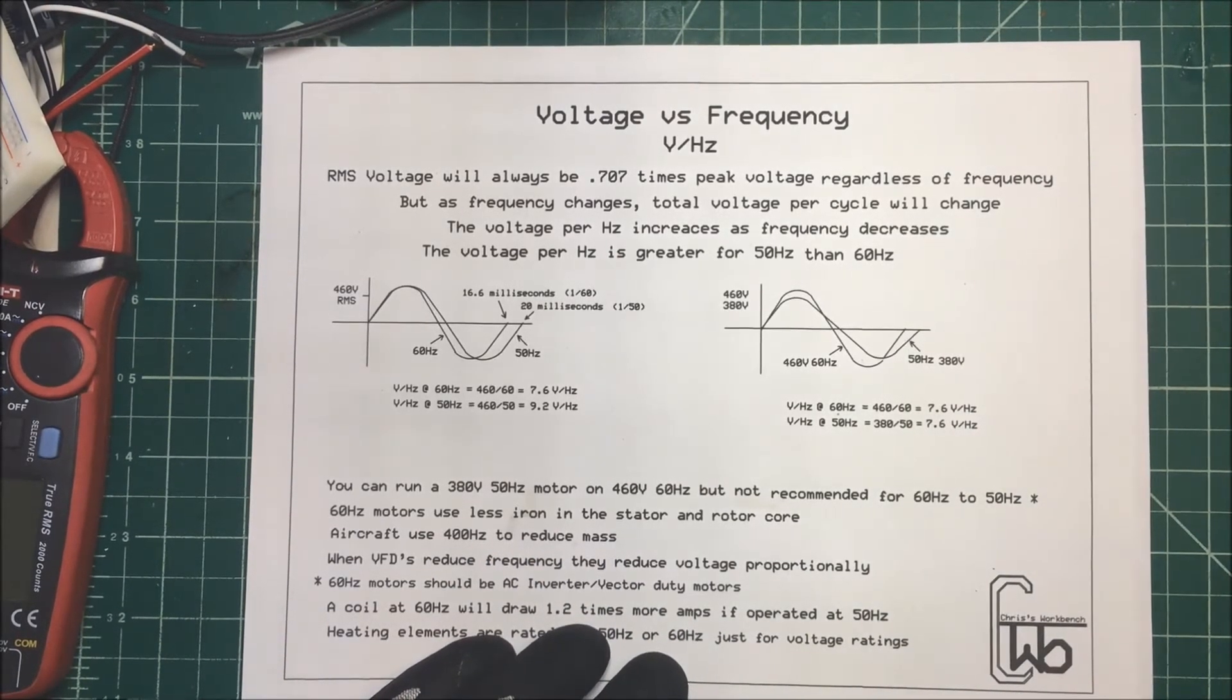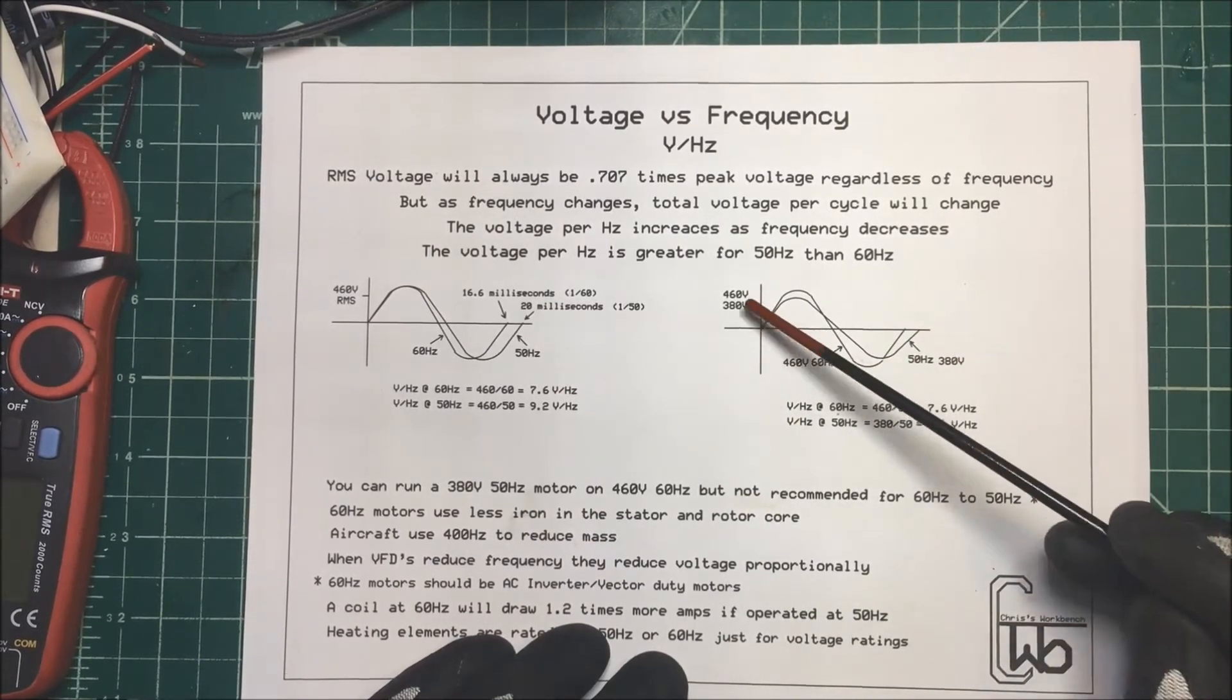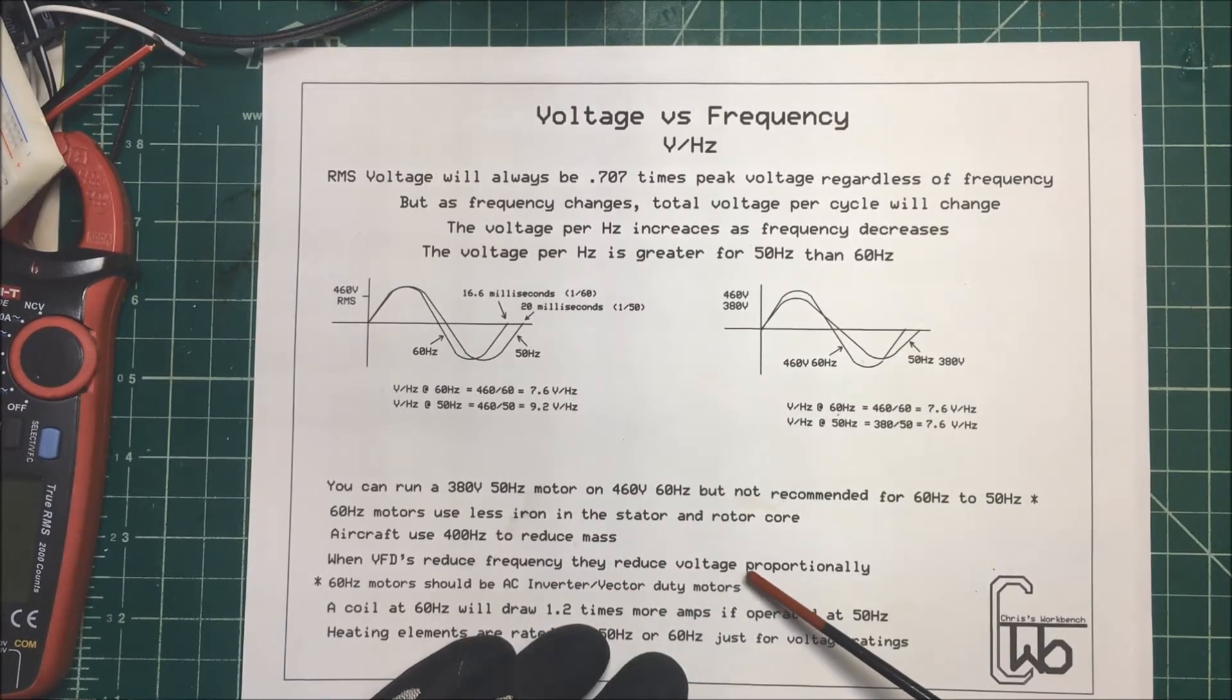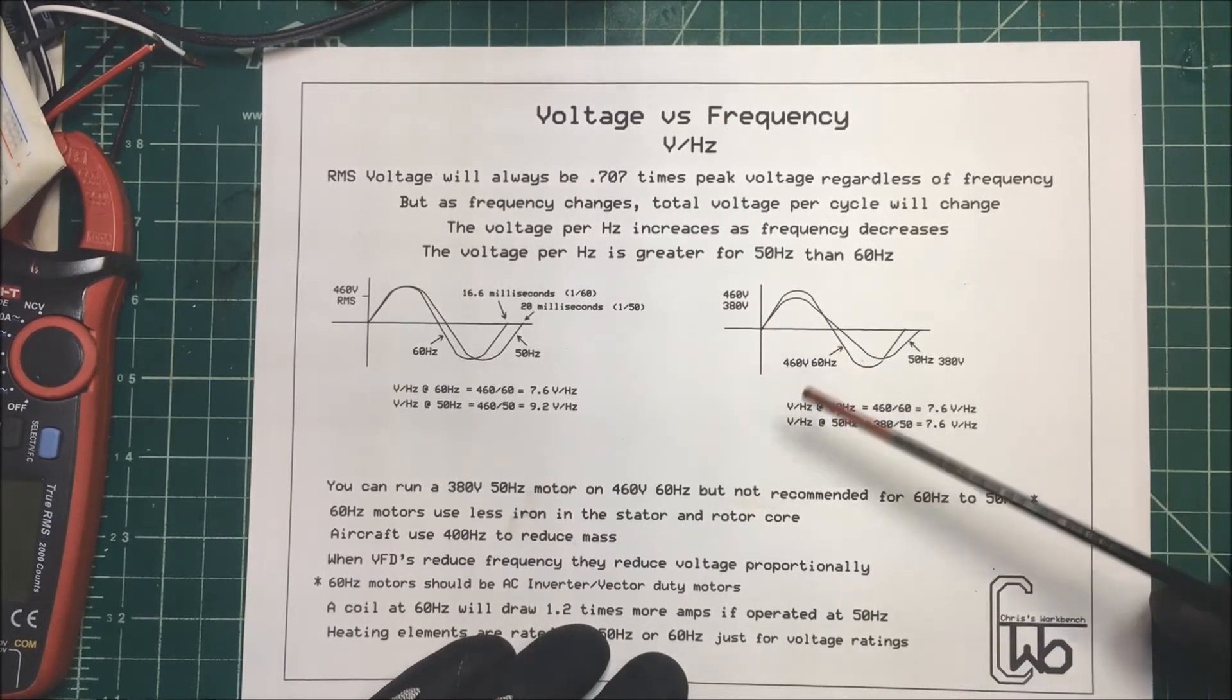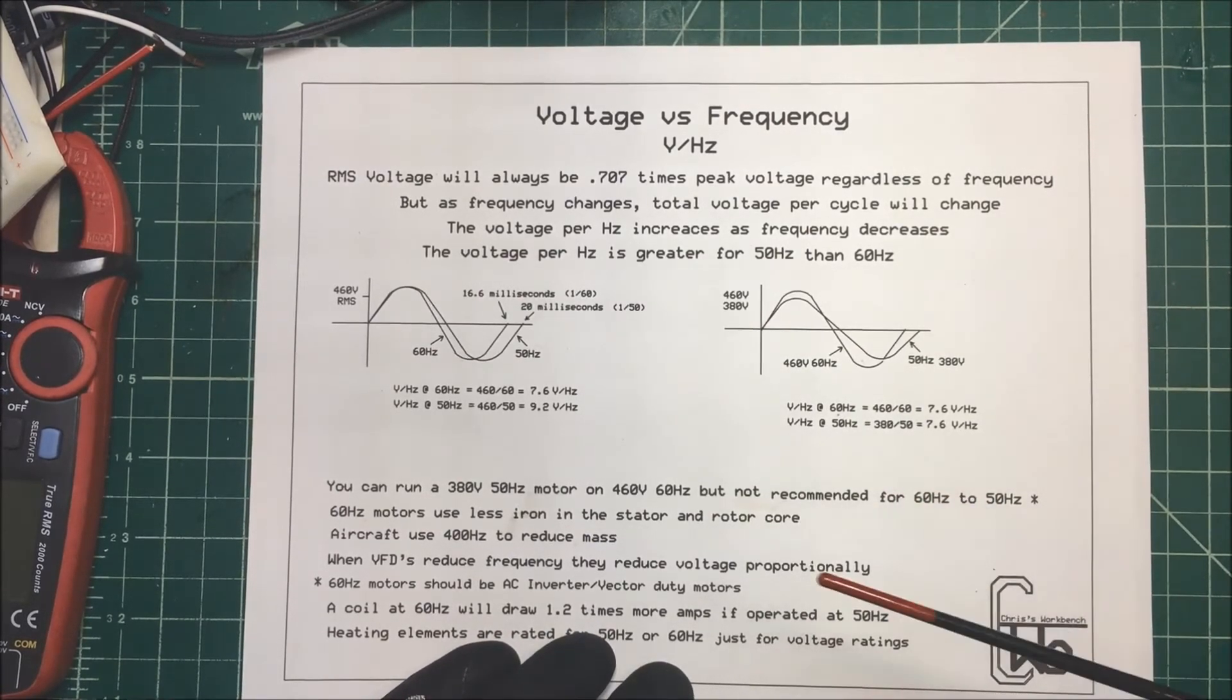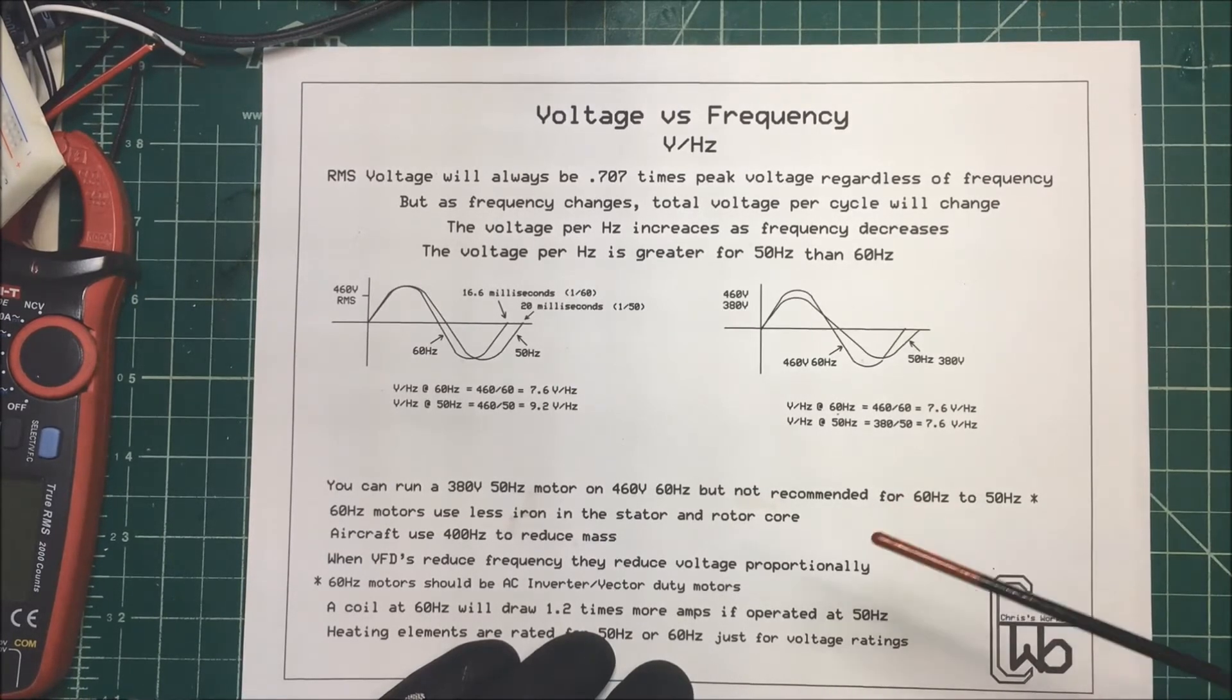But now we take and run a 460 volt motor at lower frequencies all the time. We use a VFD to reduce the frequency. And when we do that, it reduces the voltage proportionally. So at 50 hertz, it's going to give us 380 volts out of the VFD. But it's not recommended to run a standard 60 hertz motor that way because they can get hot.